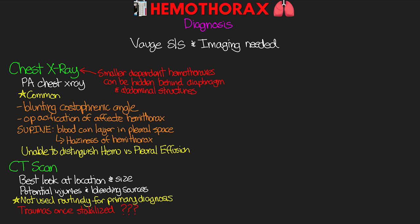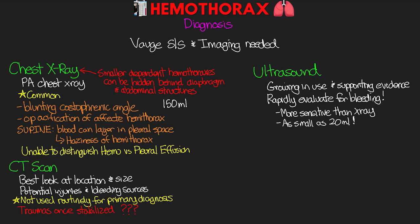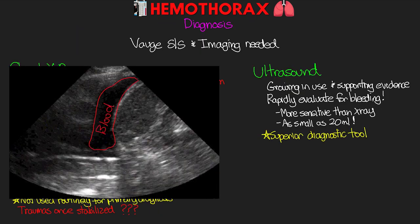That brings us to our next form of imaging: ultrasound. Bedside ultrasound use is growing and has strong evidence for rapidly evaluating the presence of bleeding. The ultrasound is more sensitive than x-ray at detecting small hemothoraxes — as small as 20 mLs of blood — whereas x-ray generally needs about 150 mLs or more to visualize it. As a result, ultrasound is actually considered a superior diagnostic tool. In this example, the black section represents the blood resting on top of the diaphragm, with the lung tissue visible on the other side. In trauma settings, ultrasound is often used before x-ray.